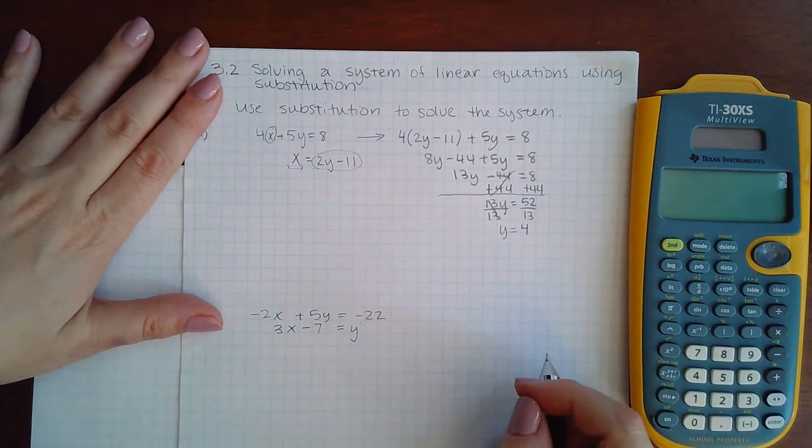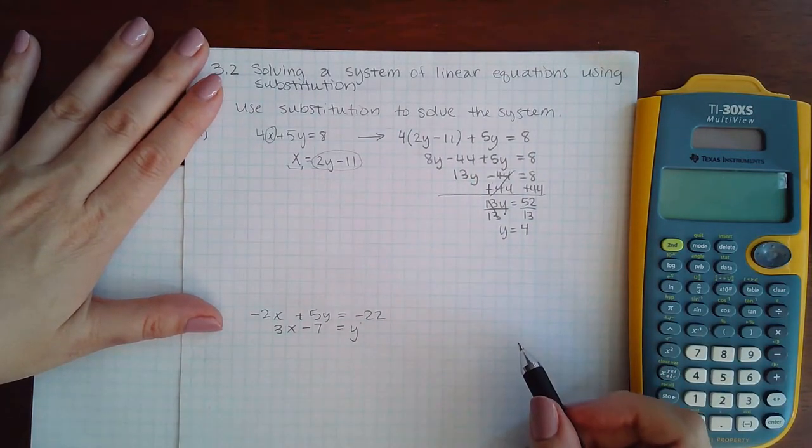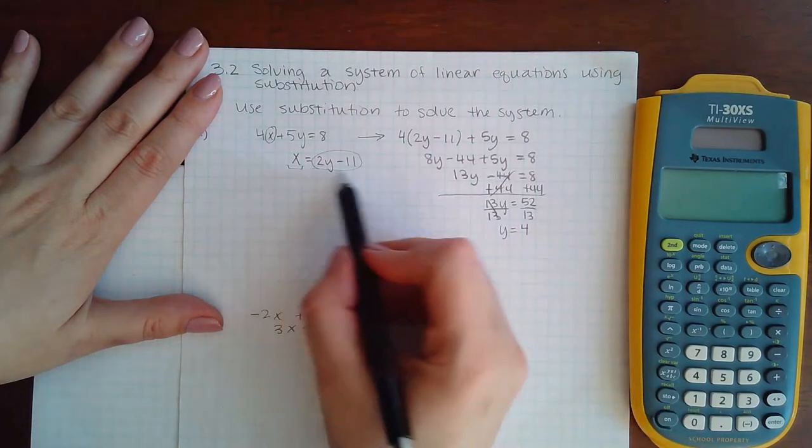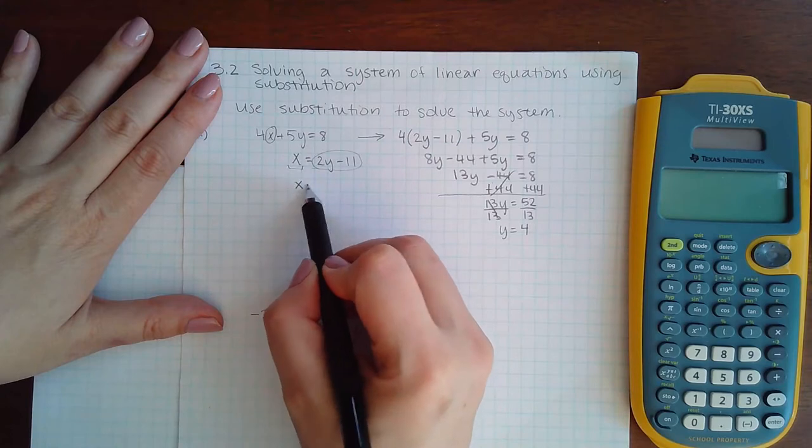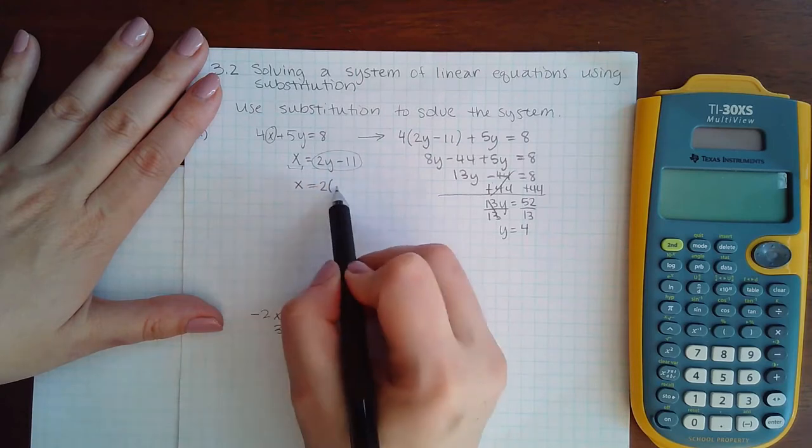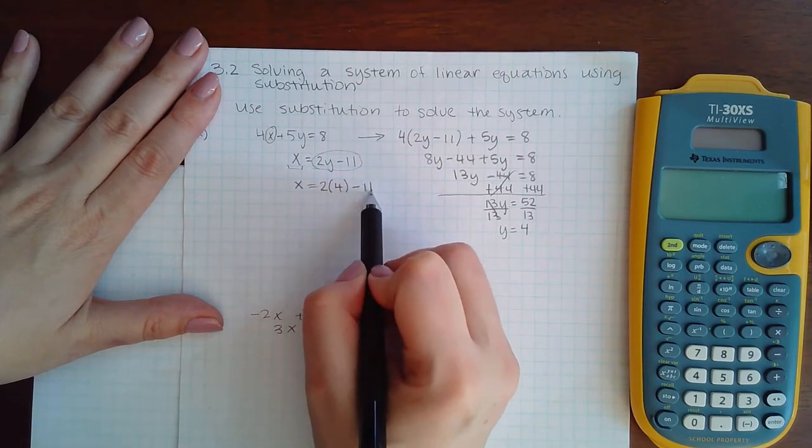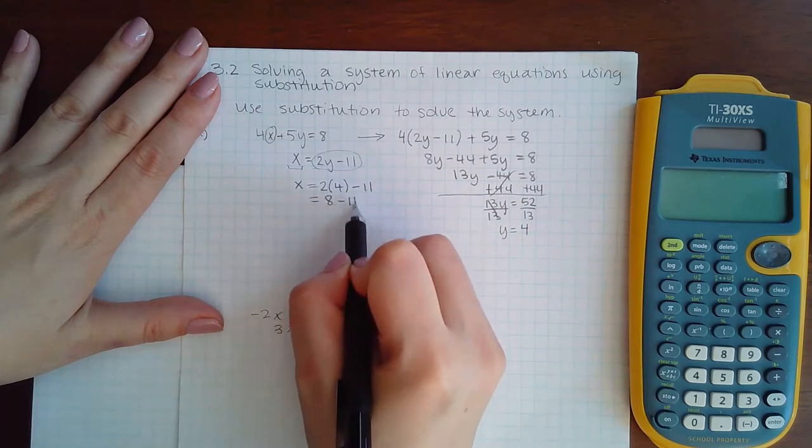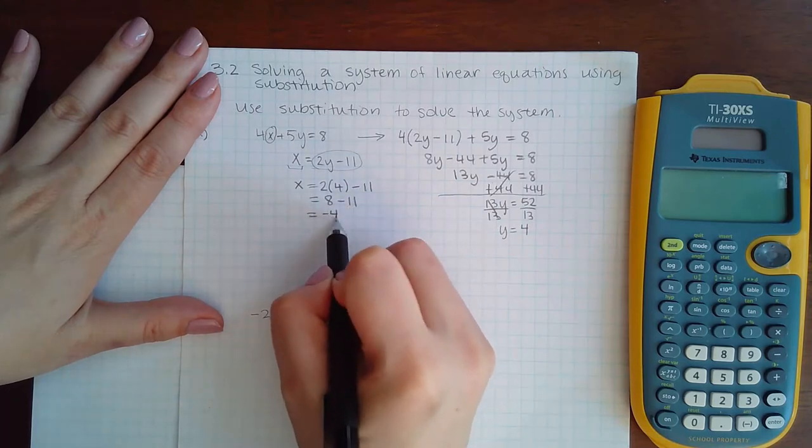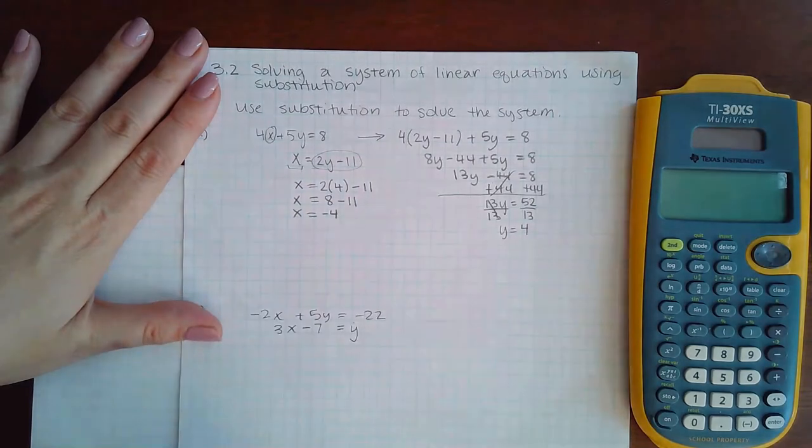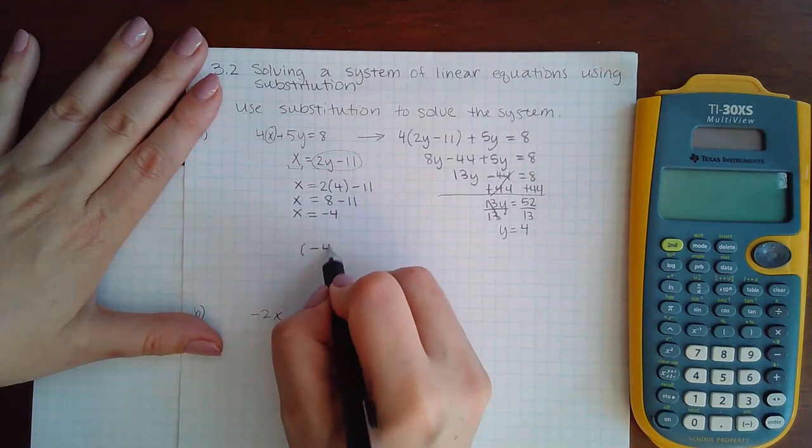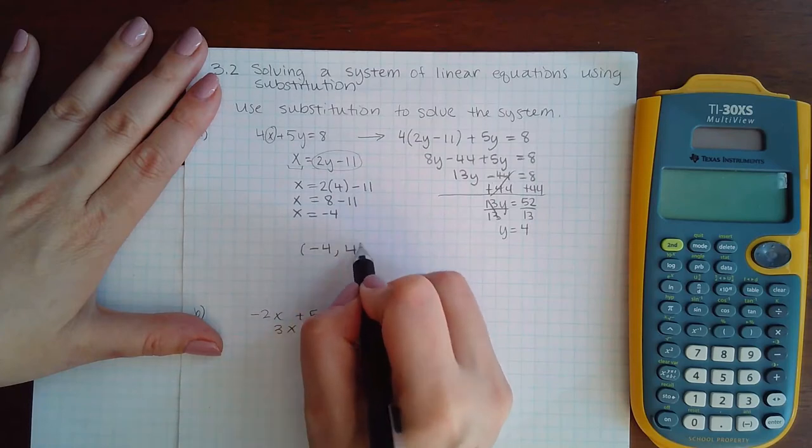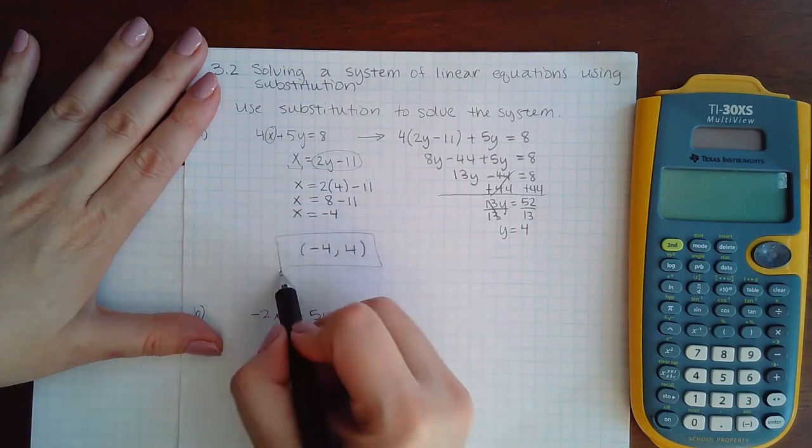Now I have the y value. In order to find the x value, I can come back to this expression to help me find x. So x equals 2 times the y value I just found gives me 8 minus 11, which is negative 4. So my point is negative 4 for the x coordinate and positive 4 for the y coordinate.